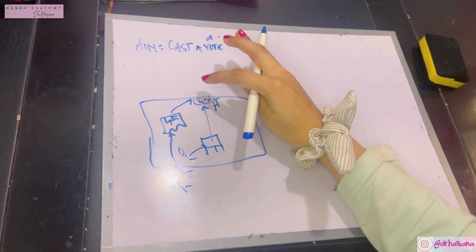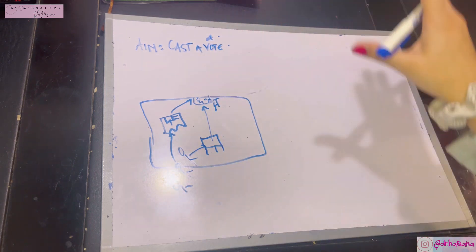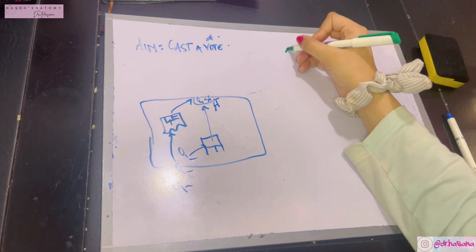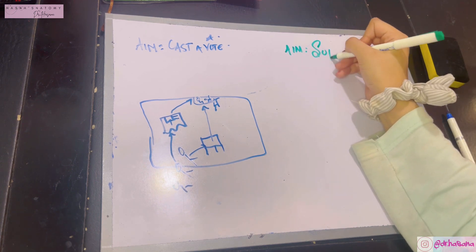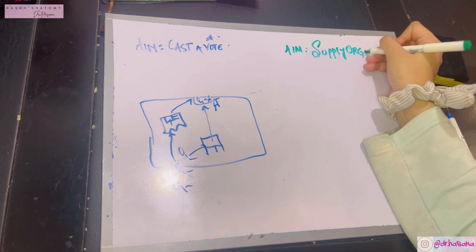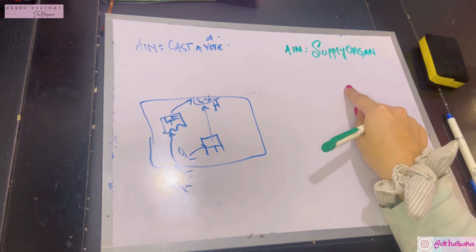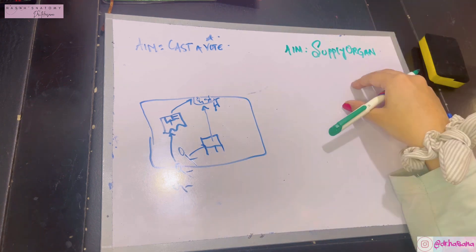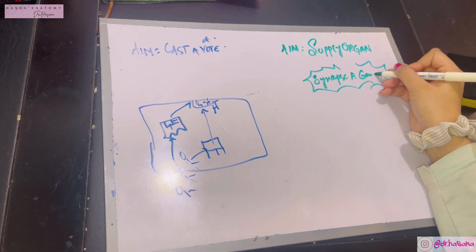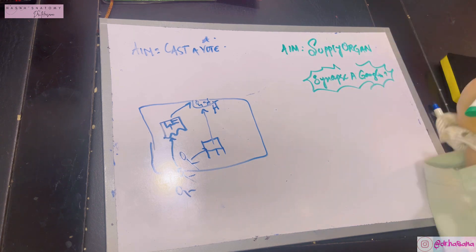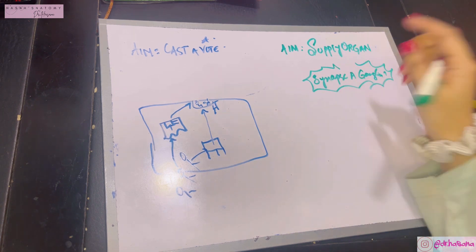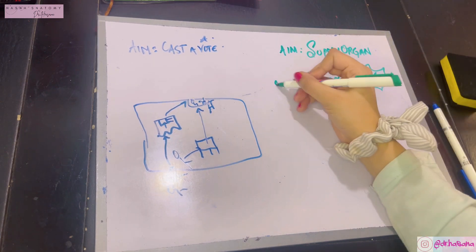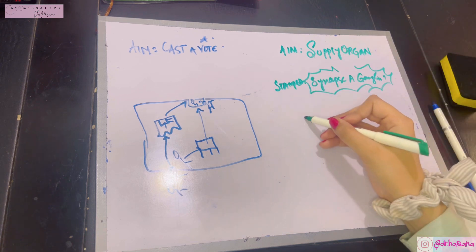Now I want you to imagine this for the abdomen, changing the terms. In the abdomen, the aim is to supply the organ — and you cannot supply the organ unless you are stamped. In anatomy, that means you have to synapse at a ganglion in order to supply the organ. A preganglionic fiber can never directly supply an organ.